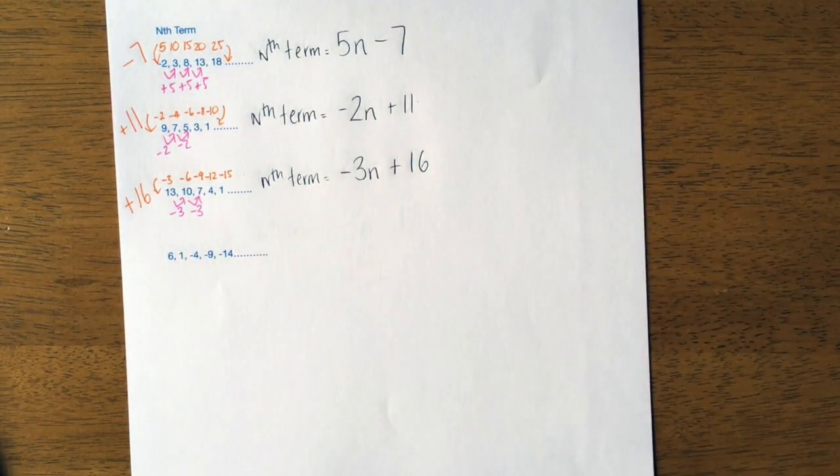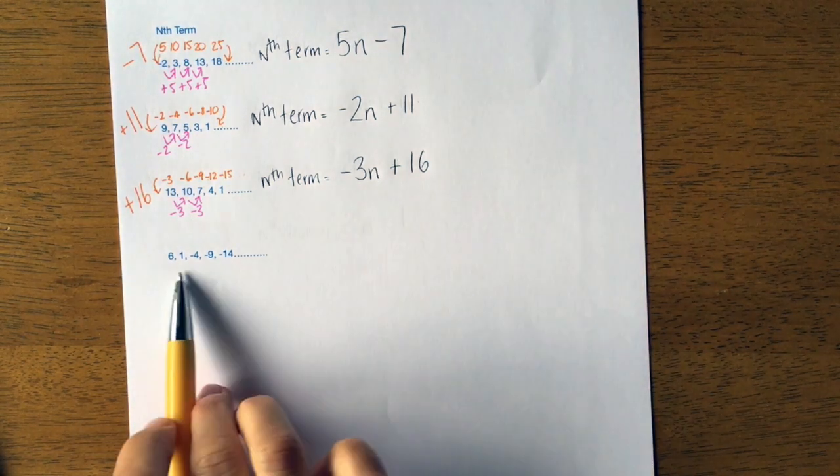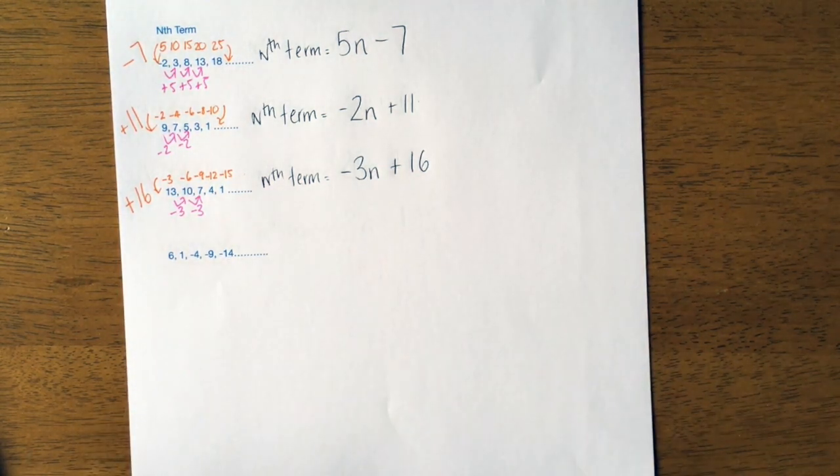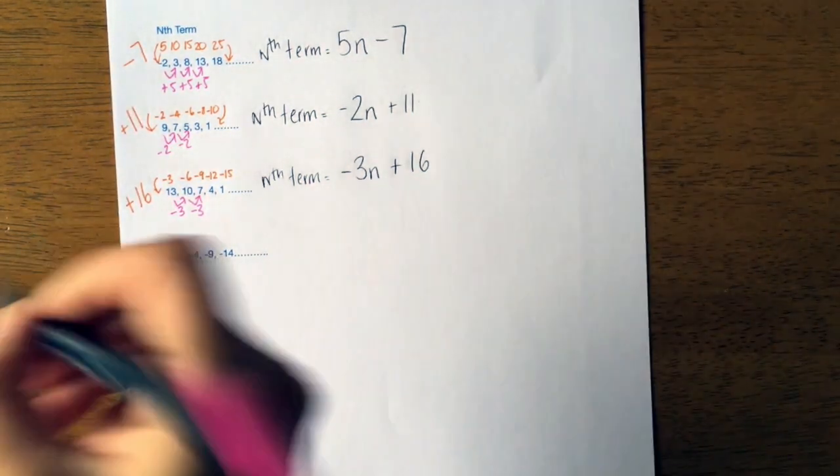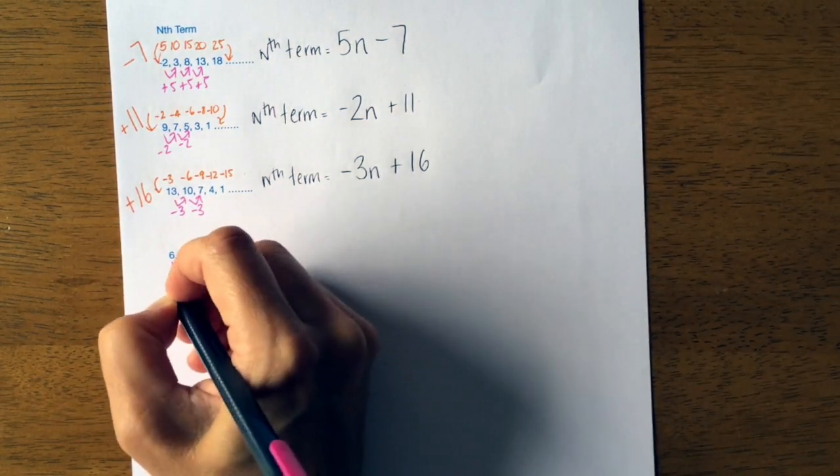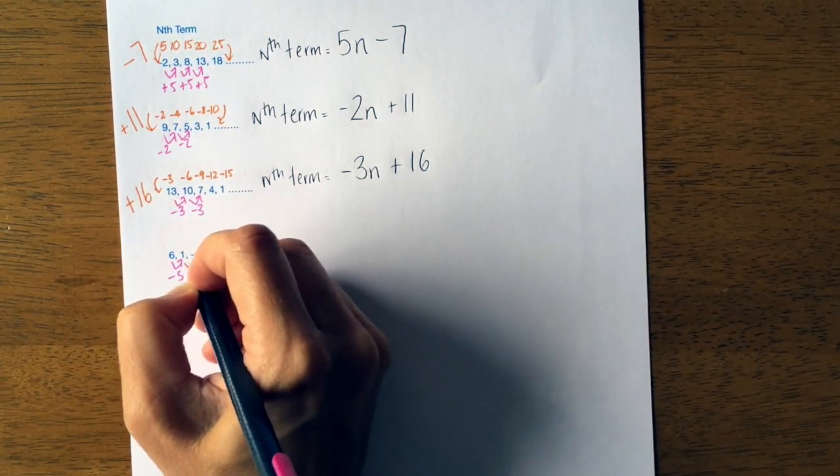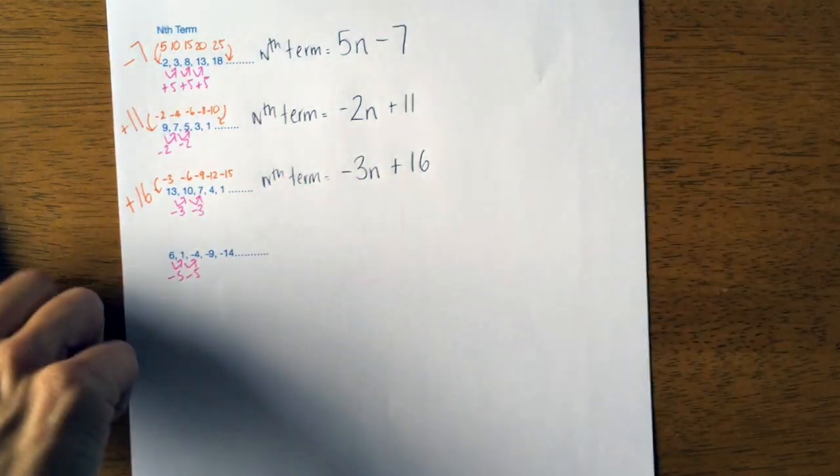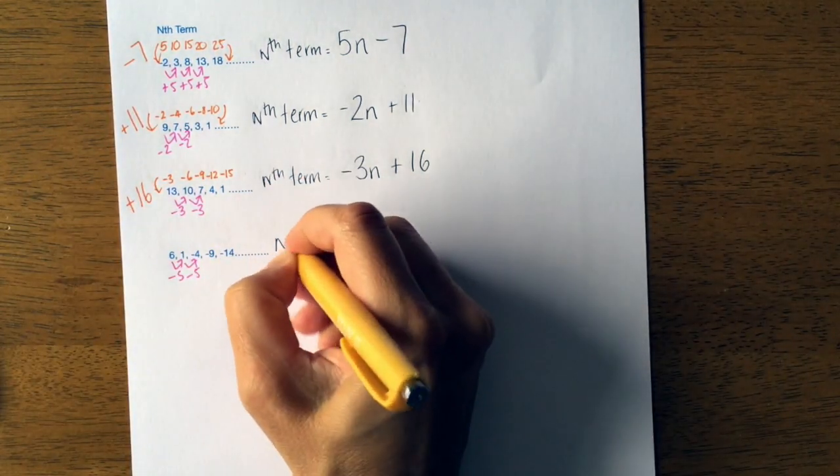The last one. This one goes into the negatives but it doesn't make a difference. I would figure out what it's going down by. It's taking away 5, so it's going down in 5s this one.